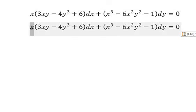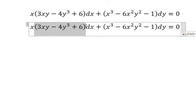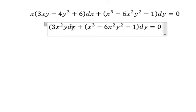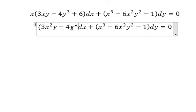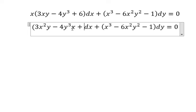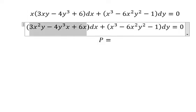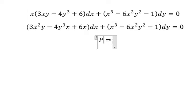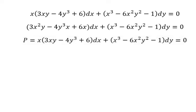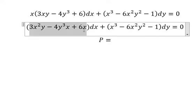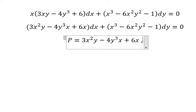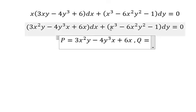So this one multiplied by this one, we have 3x squared y minus 4y to the power of 3x, plus 6x. Next I will put b equals to this one, and cube equals to this one.